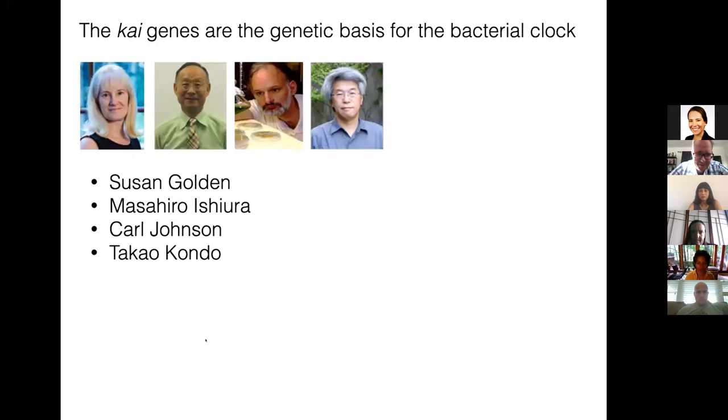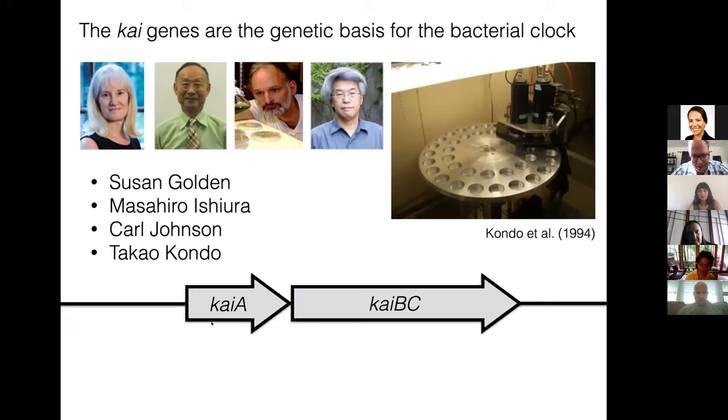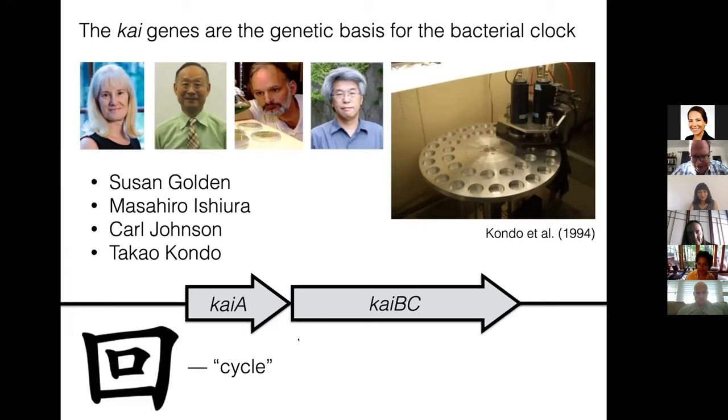These four people are in some ways some of the key founders of the field. They took a bacterial genetics approach to identify the genes responsible for this rhythm. They tracked mutations that got rid of the rhythm to these three genes that they named KaiA, KaiB, and KaiC, which had never really been described before, but they're found throughout cyanobacteria and in other bacteria. The word Kai, here's the kanji character for it, is essentially the word for cycle. So these are the cycle genes.